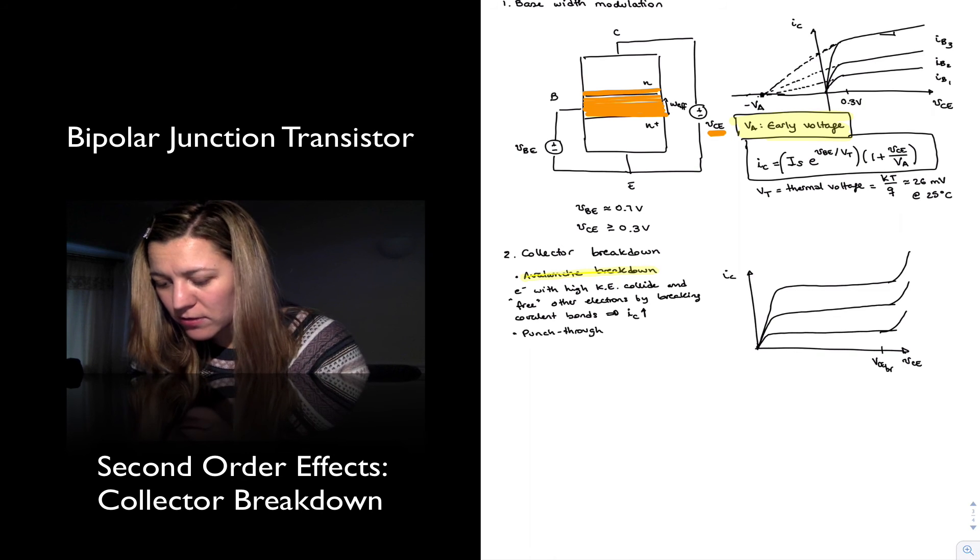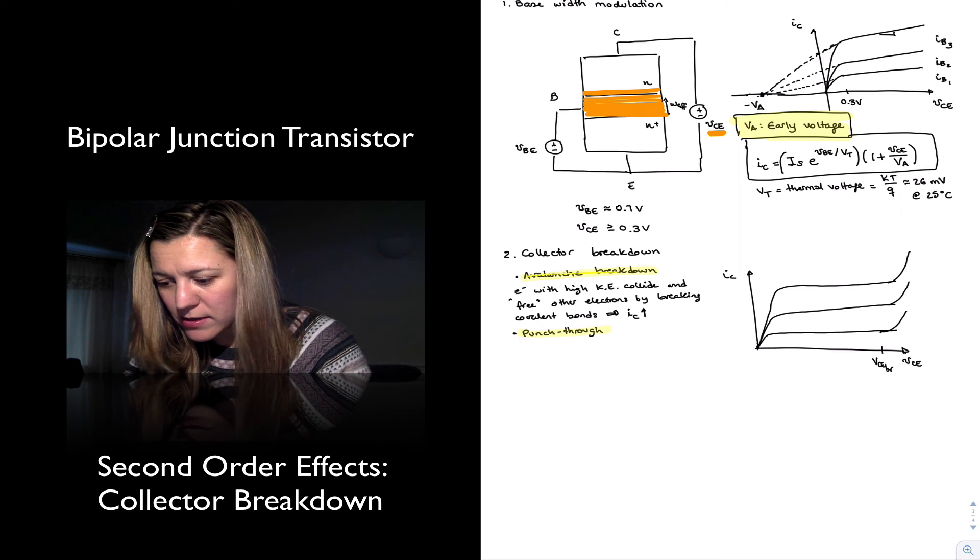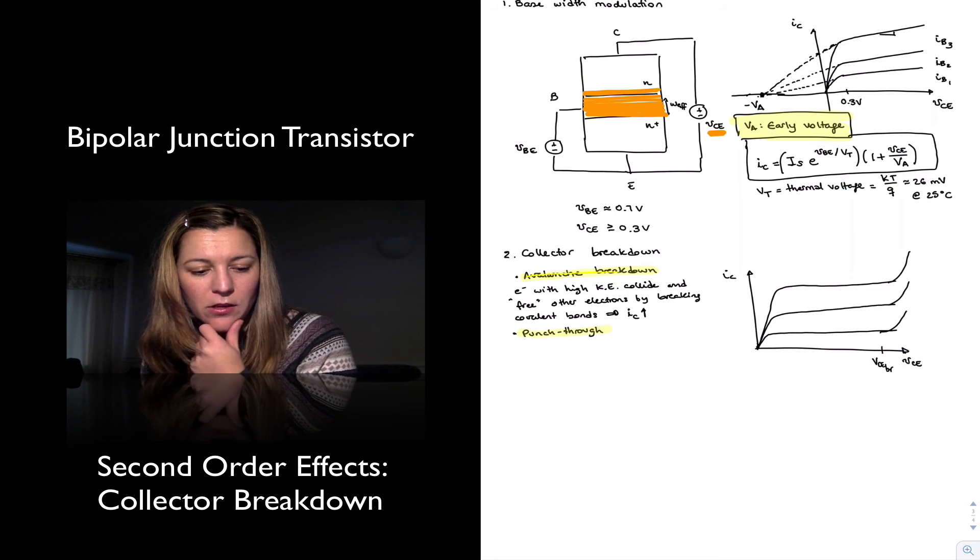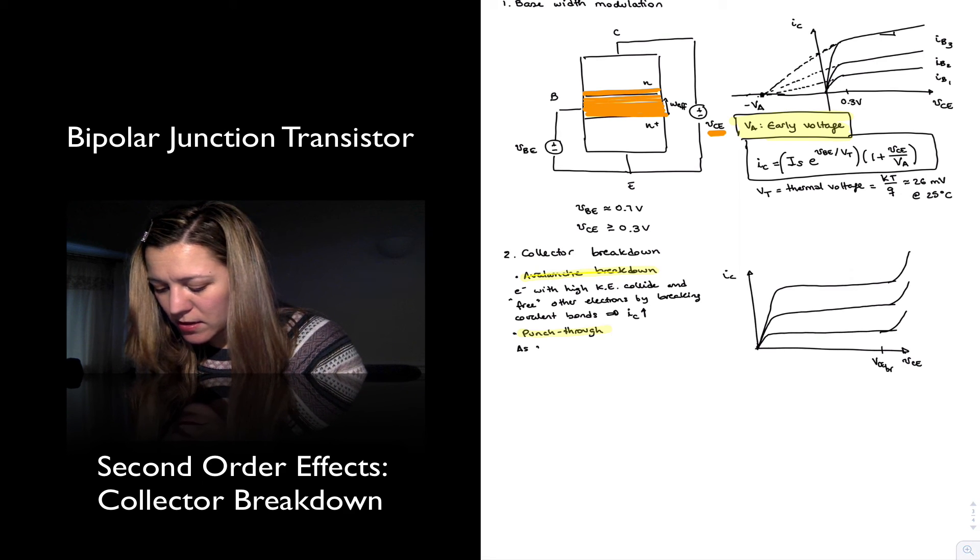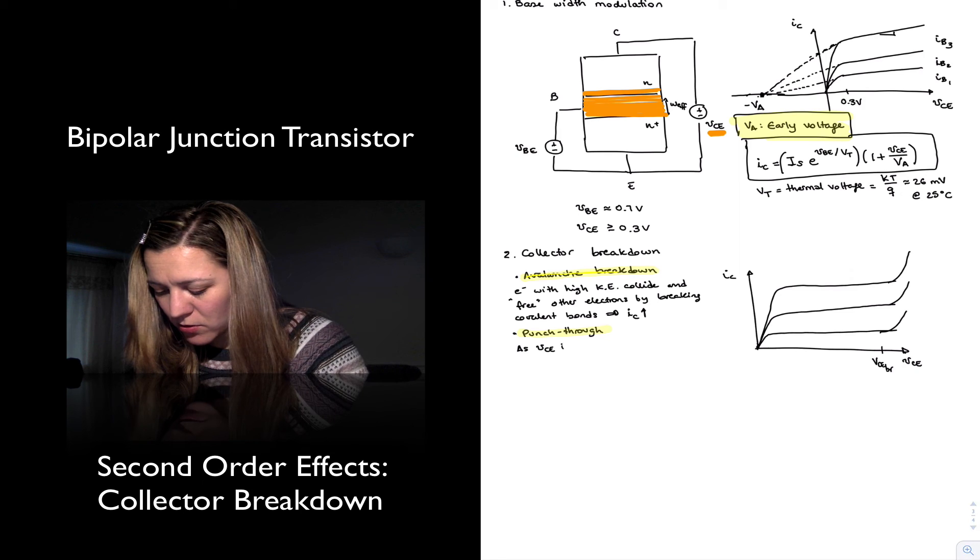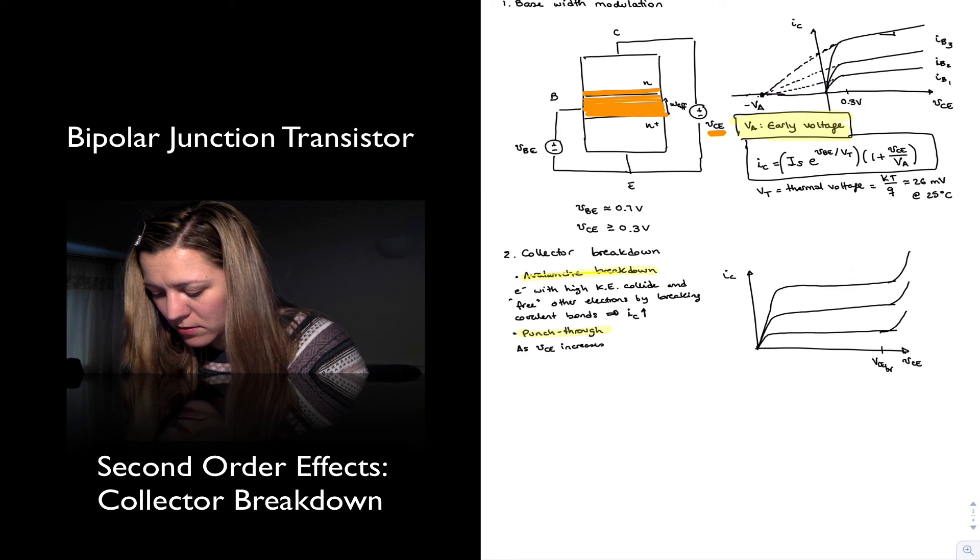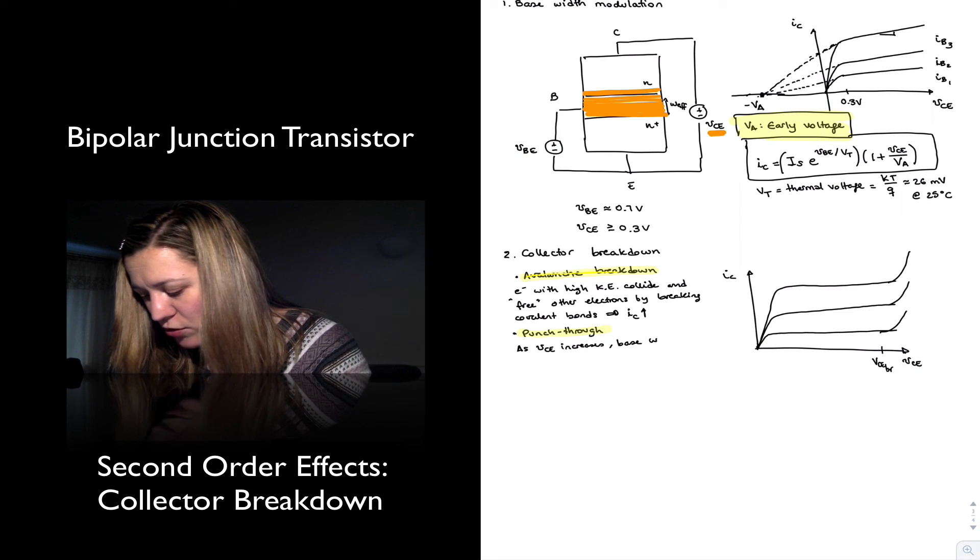So punch through effect, we could summarize it as, as VCE increases, base width modulation increases,